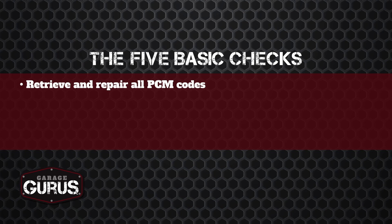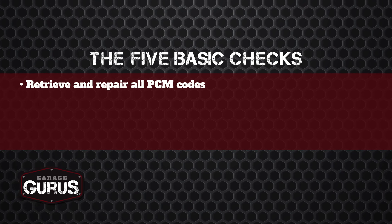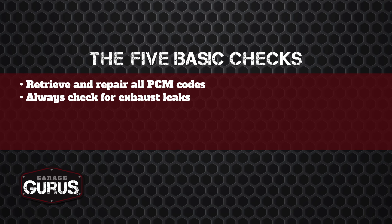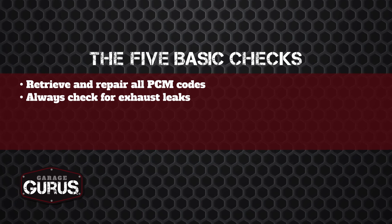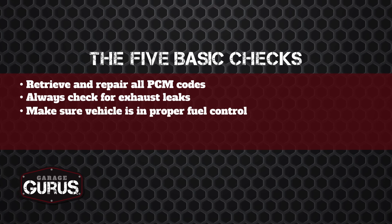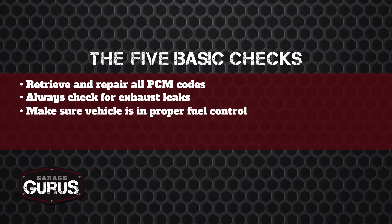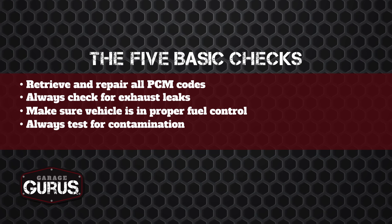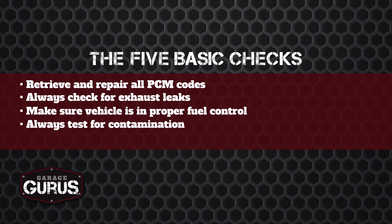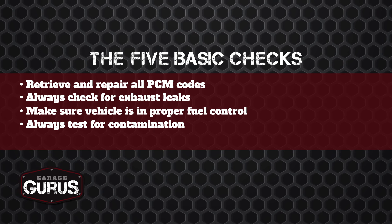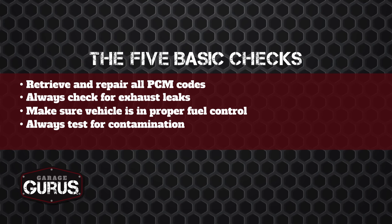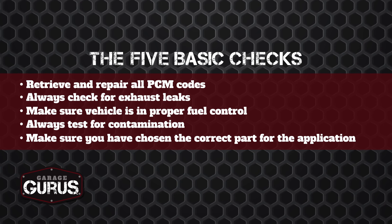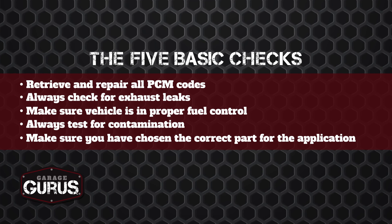Those five checks are: we're going to scan it and pull up our codes; we're going to check for any related TSBs or engine control module calibrations; we're going to look for any exhaust leaks before or after the catalytic converter; we're going to make sure the vehicle is in proper fuel control by looking at our fuel trims and check for any misfires; we're going to check for contamination from the coolant by doing a pressure check on the coolant system and a block test; and we want to check our oil level, and also make sure the correct size catalytic converter is on this vehicle.